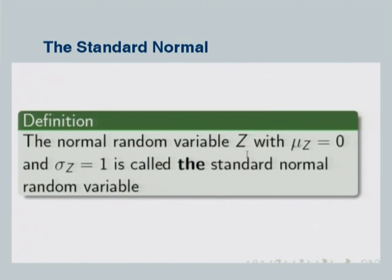The normal random variable, or the Gaussian, is the most common type of random variable and has a huge amount of applicability in real life. It is very good at modeling phenomena which occur in real life — various natural and synthetic phenomena.